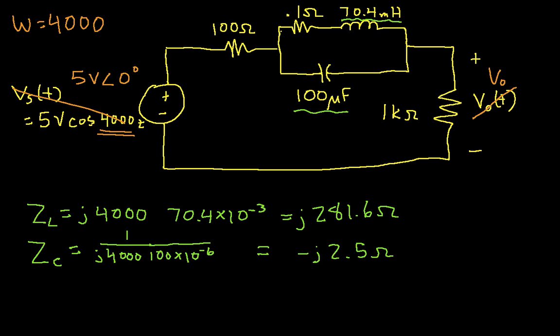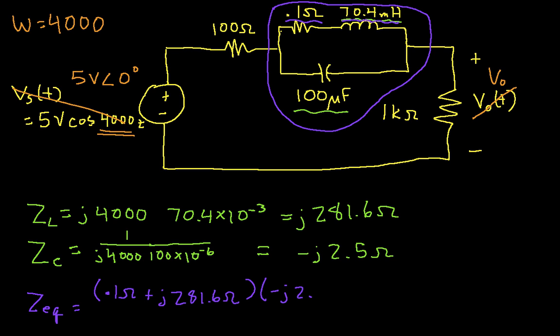Okay, so the equivalent impedance, then, of this whole chunk of the circuit I can get as 0.1 ohms, that's this guy, plus j 281.6 ohms, that's the impedance of the inductor, times minus j 2.5 ohms, that's the impedance of the capacitor, divided by 0.1 ohm plus j 281.6 ohms minus j 2.5.